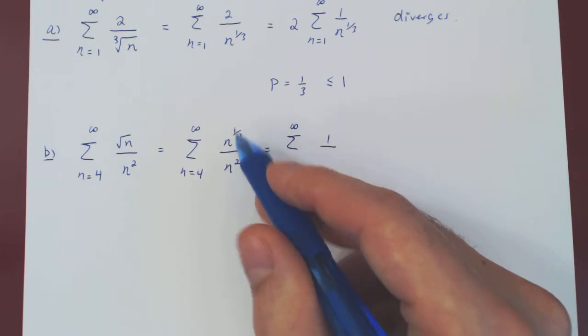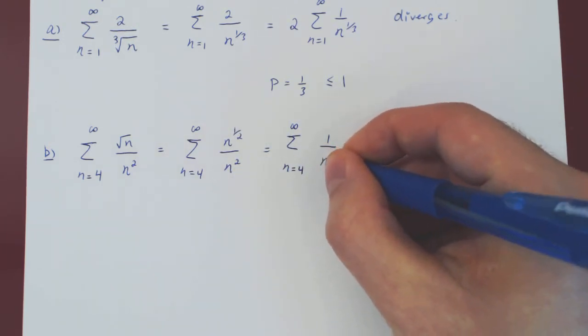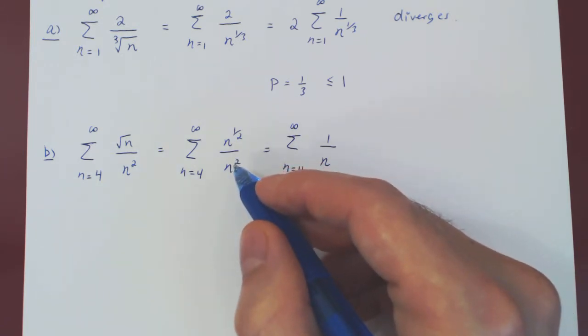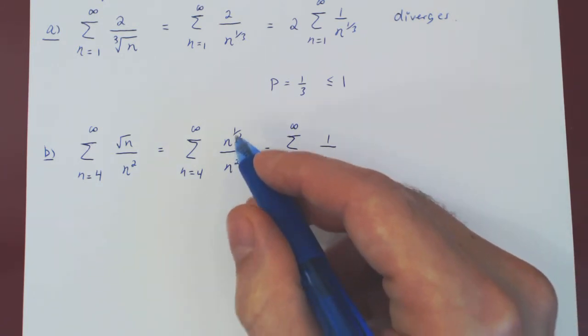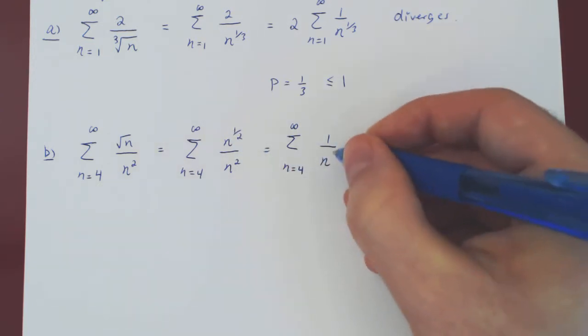When you divide the same base, you can subtract the exponents. So you'll have here, we want to keep our n in the denominator. This will be n to the 2 minus 1 half, but 2 is 4 over 2, minus 1 over 2 is 3 over 2.